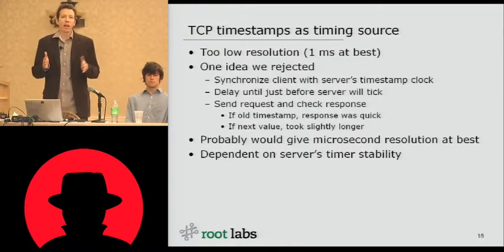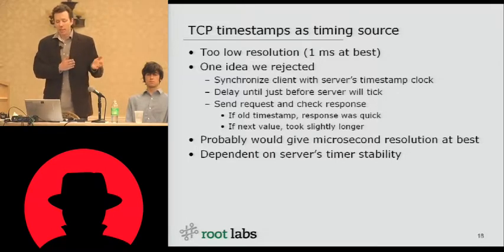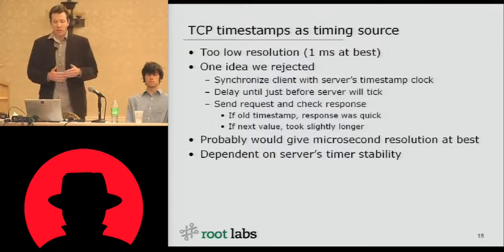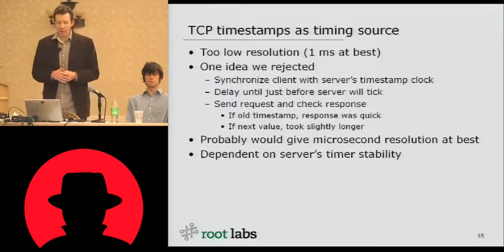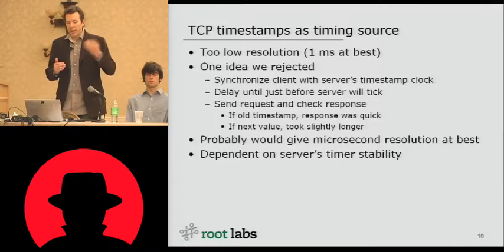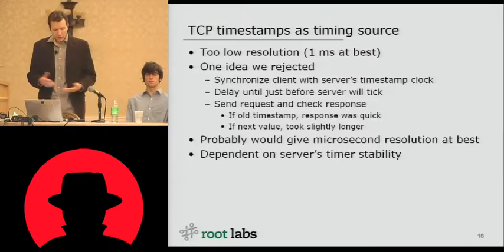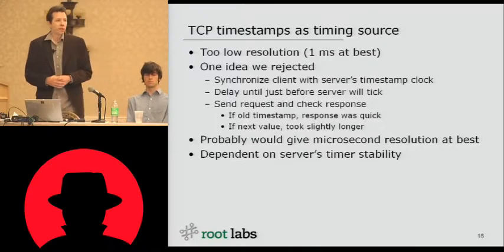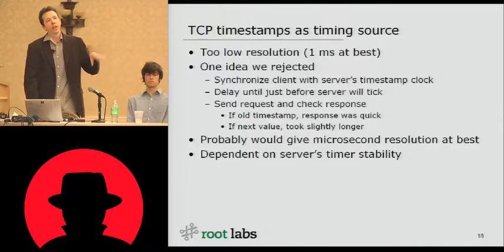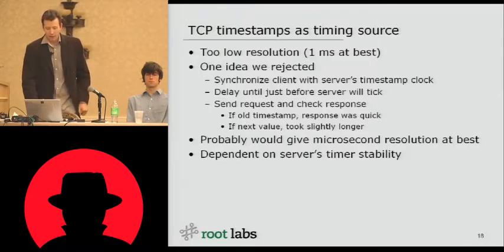One thing we thought of was: what if the client could synchronize with the server's timestamp clock by just measuring it repeatedly, and then at some point say, we know the server is going to generate a tick in the next 10 microseconds. Send the request and check the response — if you get the old timestamp, we got there before the tick happened. If it arrived after that point, we'd see the next timestamp in the sequence. This seems like it would be useful, but unfortunately it would only give about a few microseconds of resolution, and we need to resolve things down to the nanosecond level. It's also very dependent on the server's timers — if the server ticks at a slightly slower or faster rate based on load or Linux tickless scheduling, this might not be a reliable method. But it's still worth more investigation.